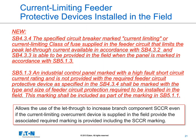A new change allows you to provide the overcurrent device in the field. So, for instance, if we had a fuse or current limiting breaker in the feeder, it could be provided by the customer in the field, provided the equipment is properly marked with what was required per SB 5.1.3. This allows the user — rather than the OEM — to provide the overcurrent device installed outside the equipment, and still maintain the high SCCR.